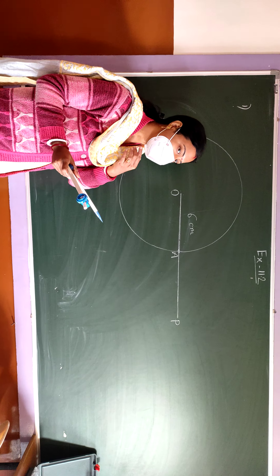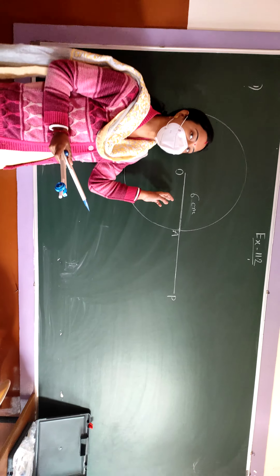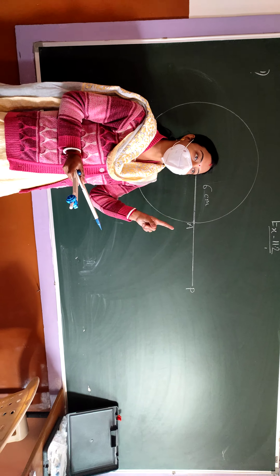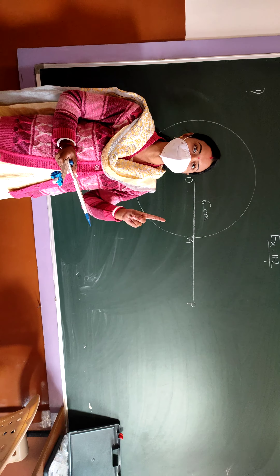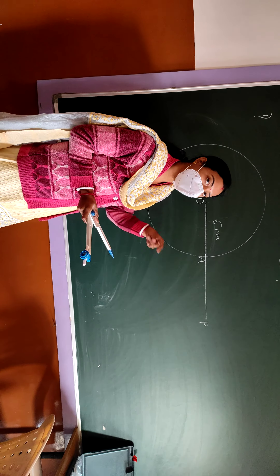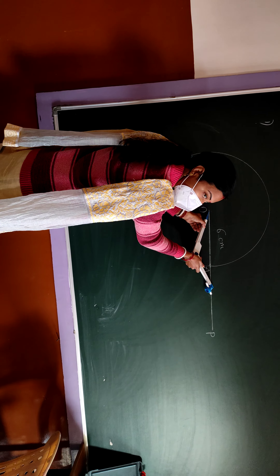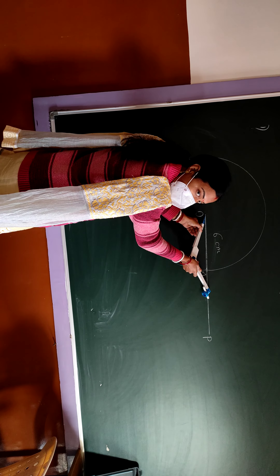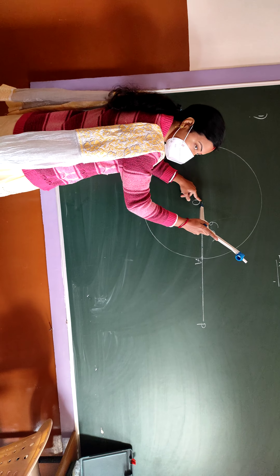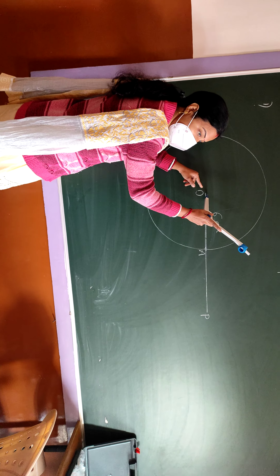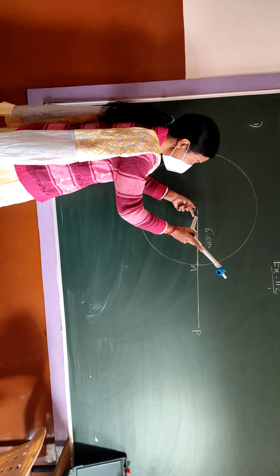Now we have to draw the perpendicular bisector of OP. The perpendicular bisector will give us the midpoint of OP. Take a compass measurement less than OP, then keep the compass pin at point O.